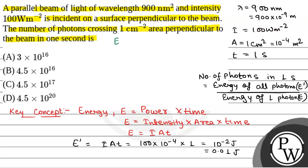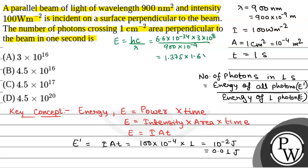The energy of one photon will be equal to E = hc by lambda. That will be equal to 6.6 into 10 to the power minus 34 into 3 into 10 to the power 8, divided by lambda, that is 900 into 10 to the power minus 9 meter. On solving, we will get it as 1.375 into 1.6 into 10 to the power minus 19 joule, because it is 1.375 electron volt, and to convert it into joule we multiply by 1.6 into 10 to the power minus 19.